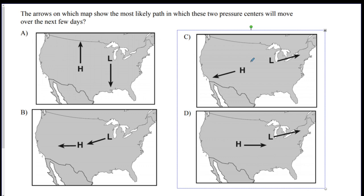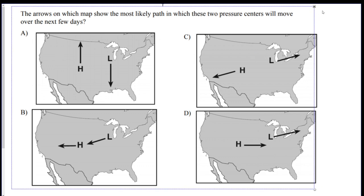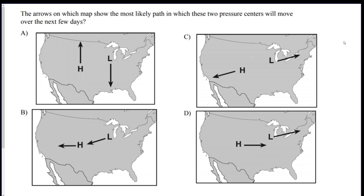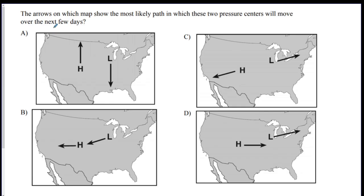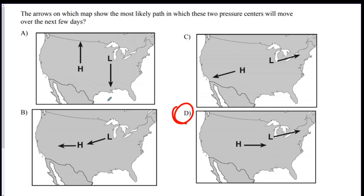Number eight, the arrows show the most likely path where which two systems will move. So which way is the H and the L probably going to go if they're over the United States? Remember, we are in the prevailing southwesterlies, so all of our weather is going to go towards the northeast. So your best answer is D. And I lost my mouse. Lost my little pen. D. Because everything's going to go this way. Always. D.